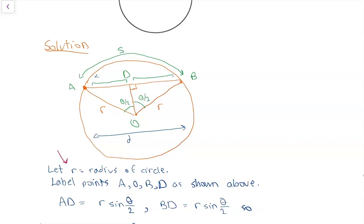One thing to note is D is the midpoint of AB and also OD is perpendicular to AB. We also have that OD bisects the angle AOB. So we have angle AOD and BOD are both equal to theta over 2.